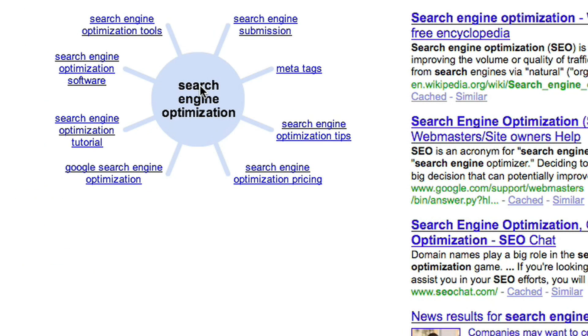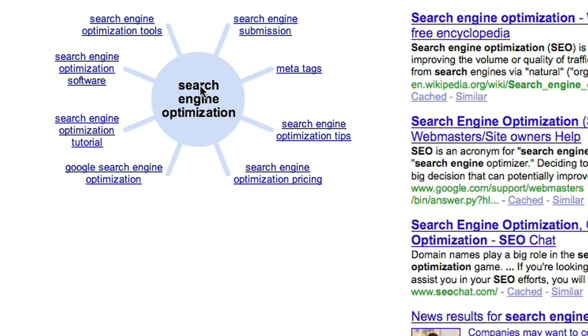So there's 'search engine optimization software,' there's one for 'tutorial,' there's one for 'tools,' 'search engine submission.' It doesn't have to be the exact phrase. There's also 'Google Search Engine Optimization.'